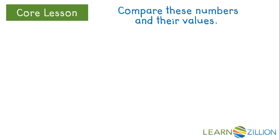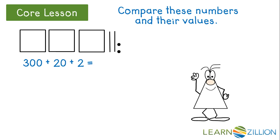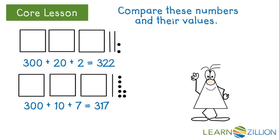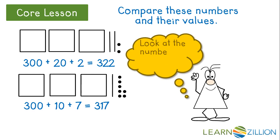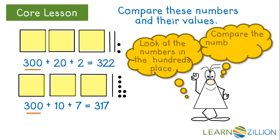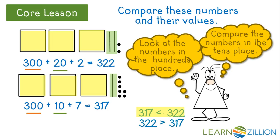Let's compare these numbers and their values. 300 plus 20 plus 2 is 322. 300 plus 10 plus 7 is 317. Let's look at the numbers in the hundreds place. Three hundreds in 322, three hundreds in 317. Let's compare the numbers in the tens place: two tens or 20 in 322, one 10 in 317. 317 is less than 322. It has less tens. 322 is greater than 317.